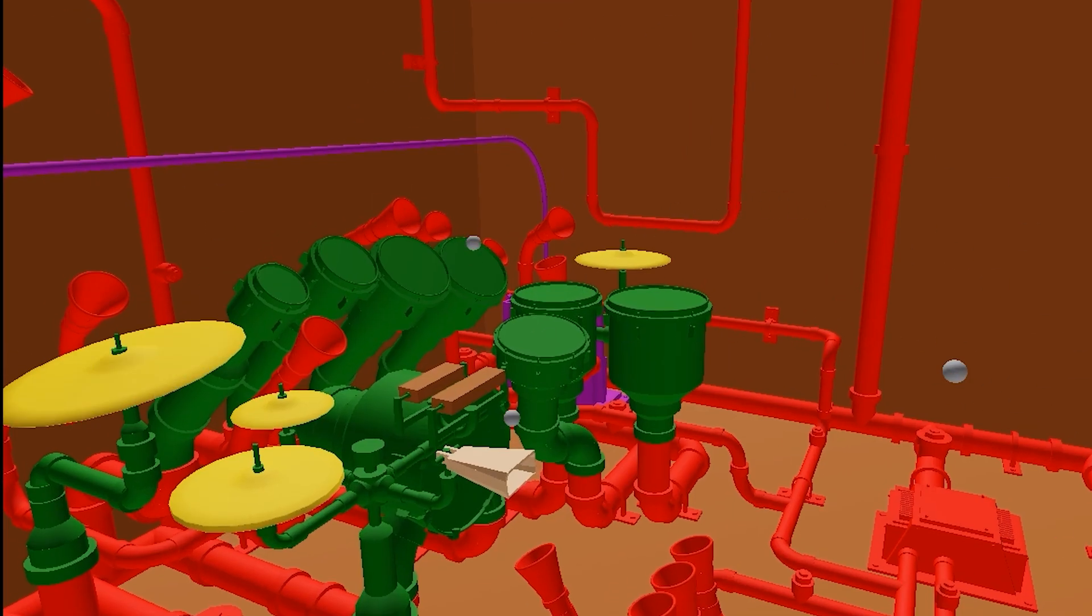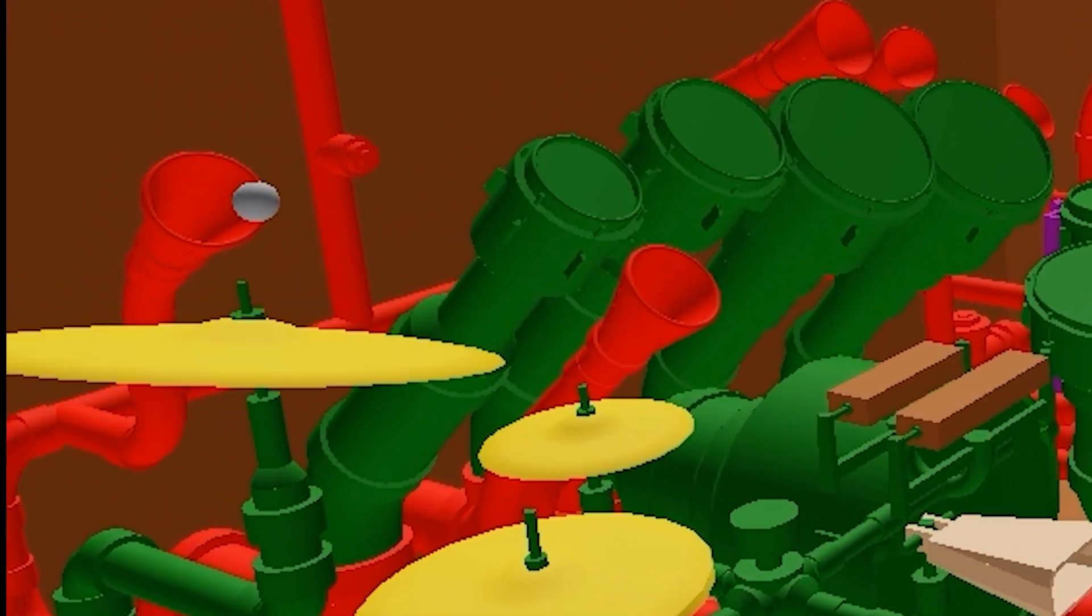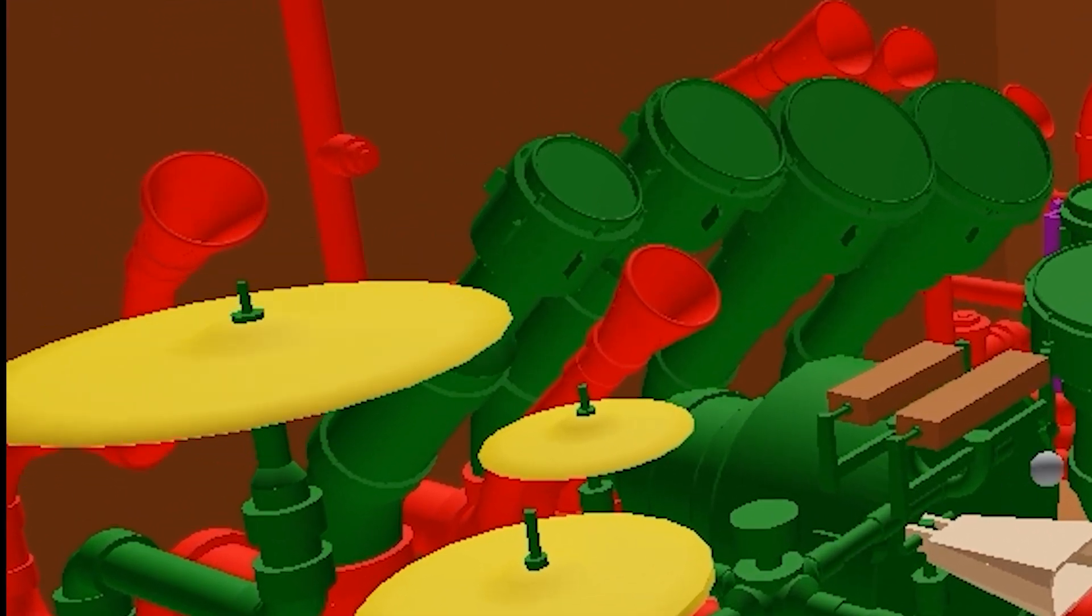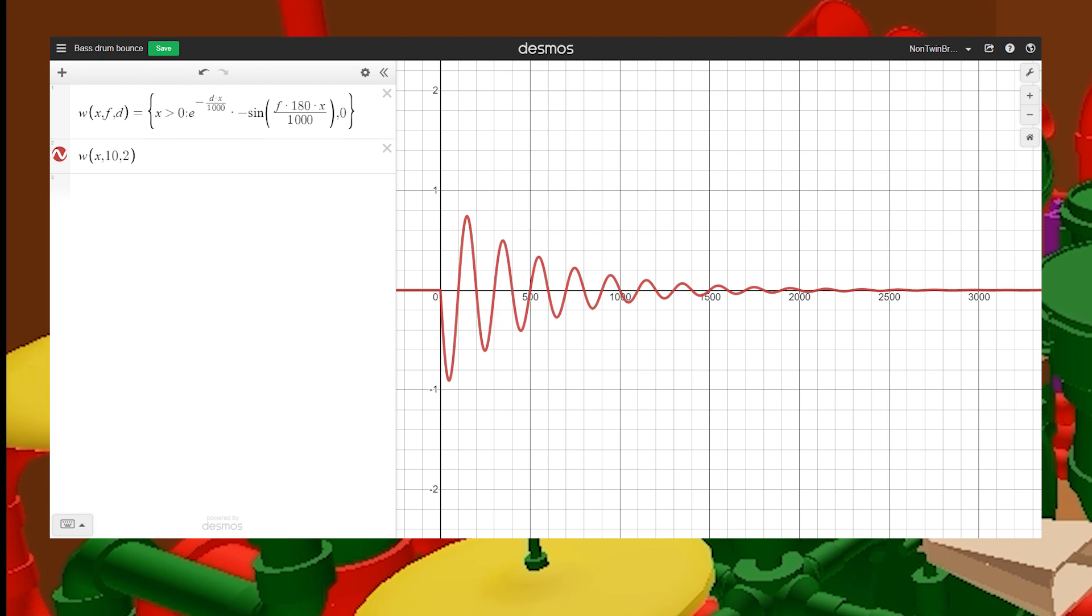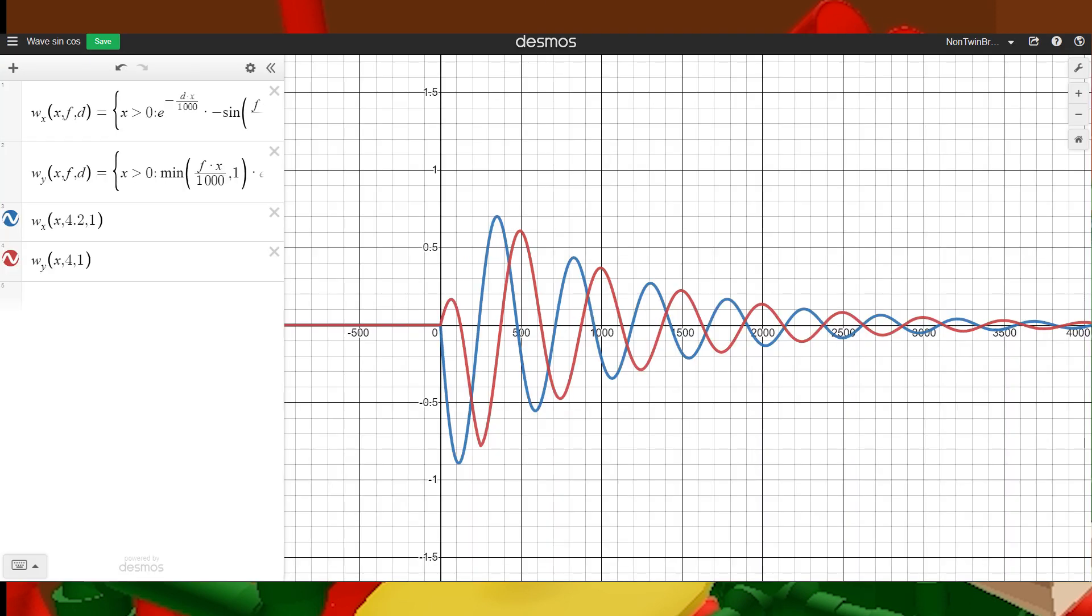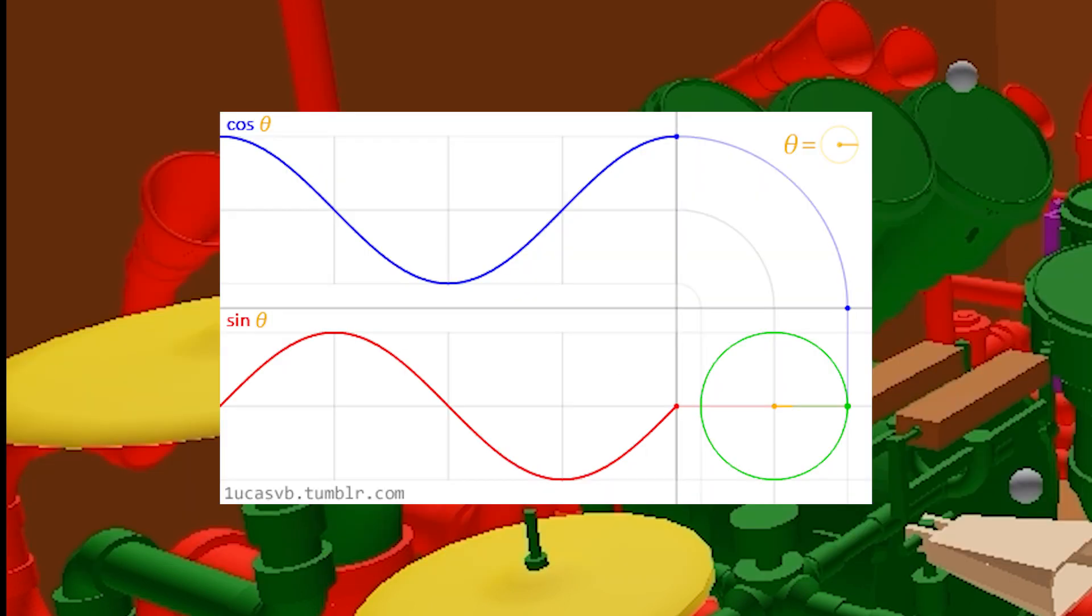The cymbals are more complicated, and at first it doesn't seem like it's obvious at all, but my approach to them was to use the same decaying wave function I have been, but to offset one of them.